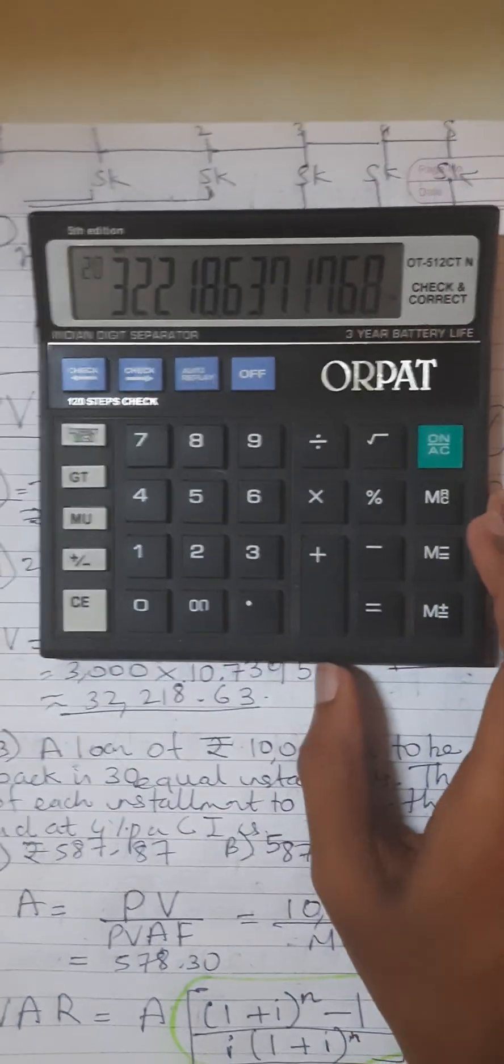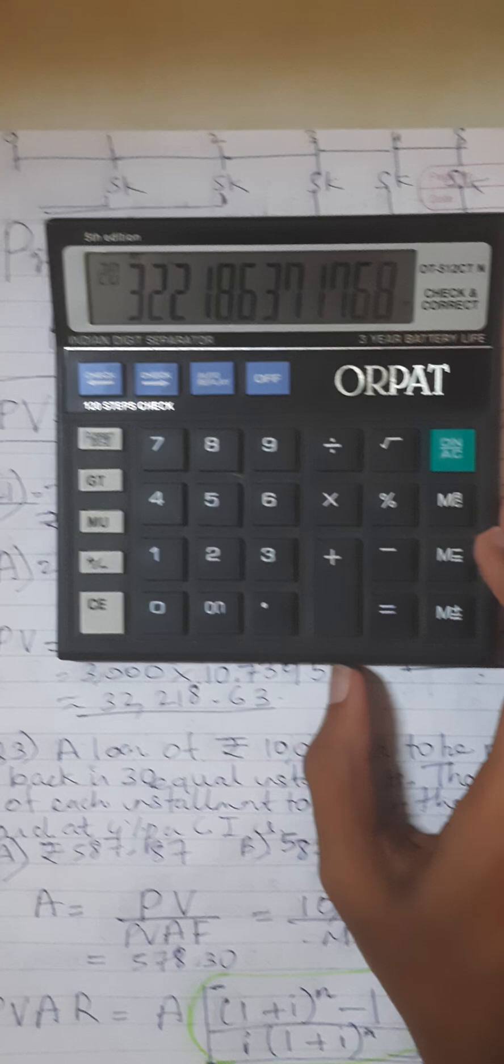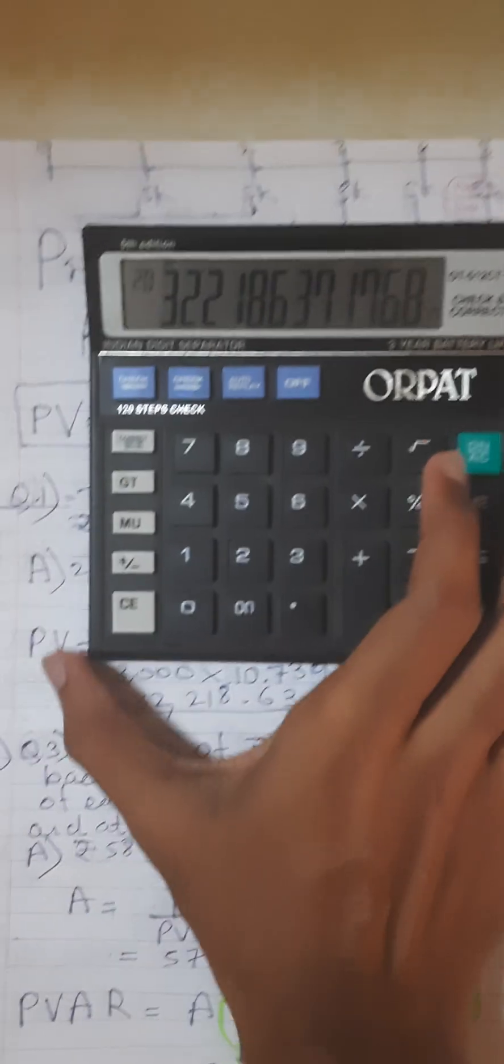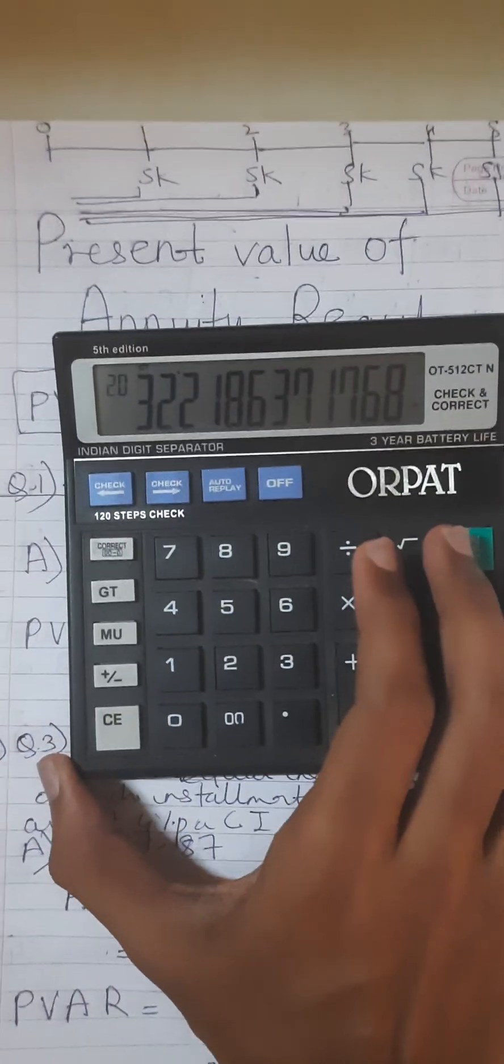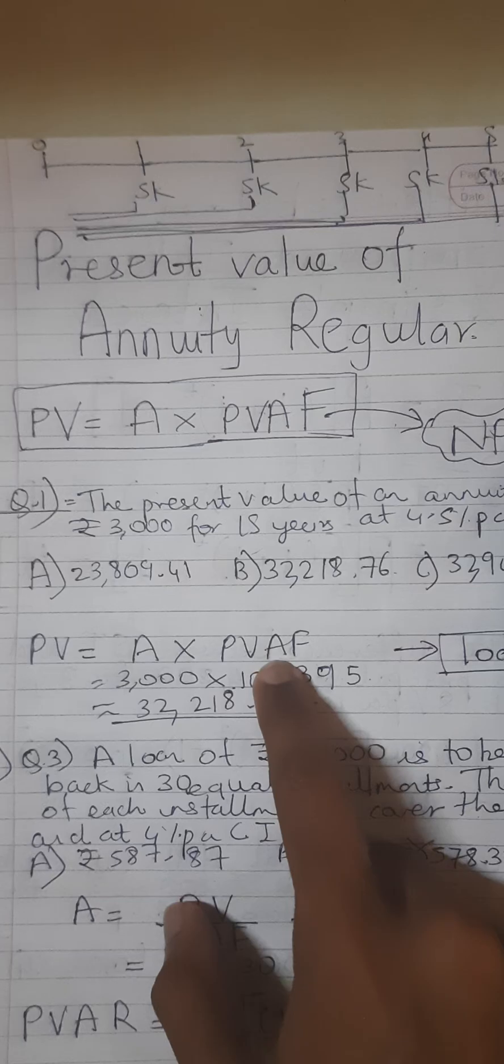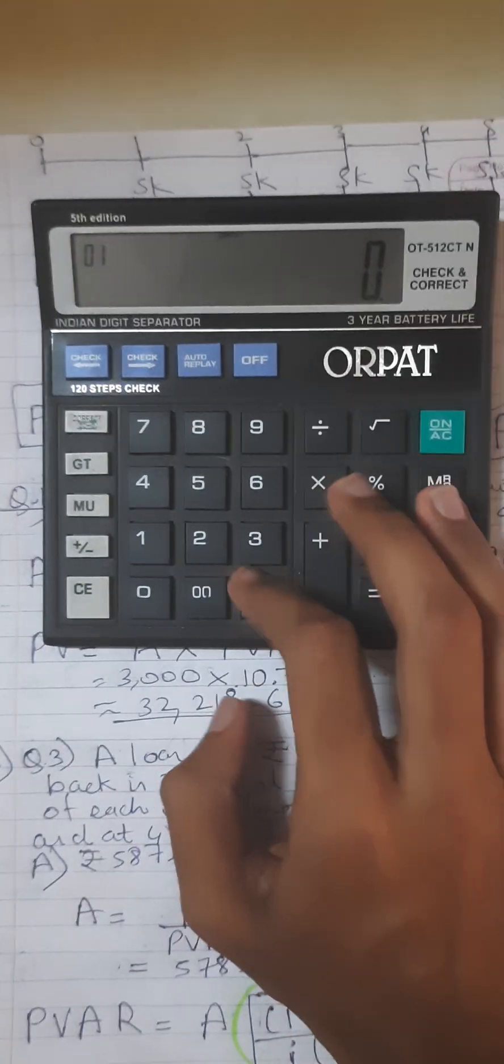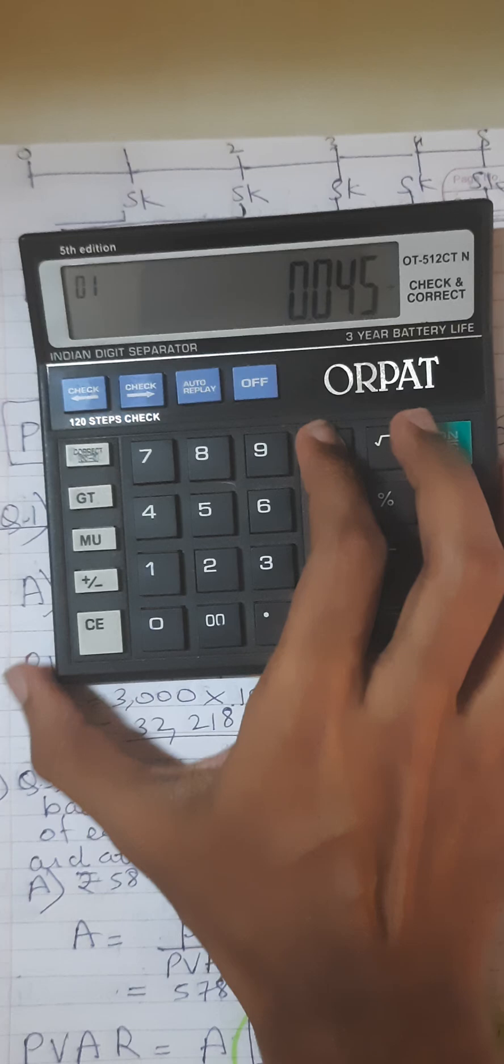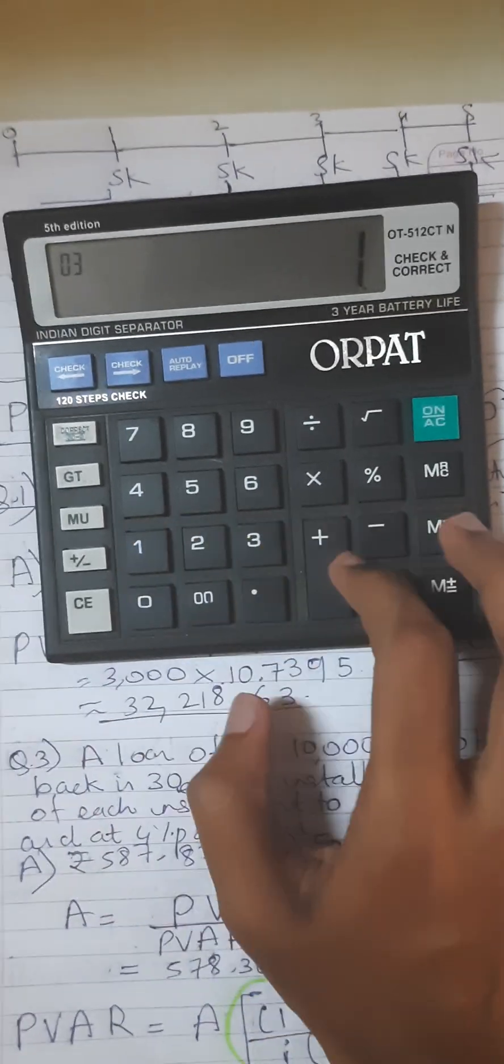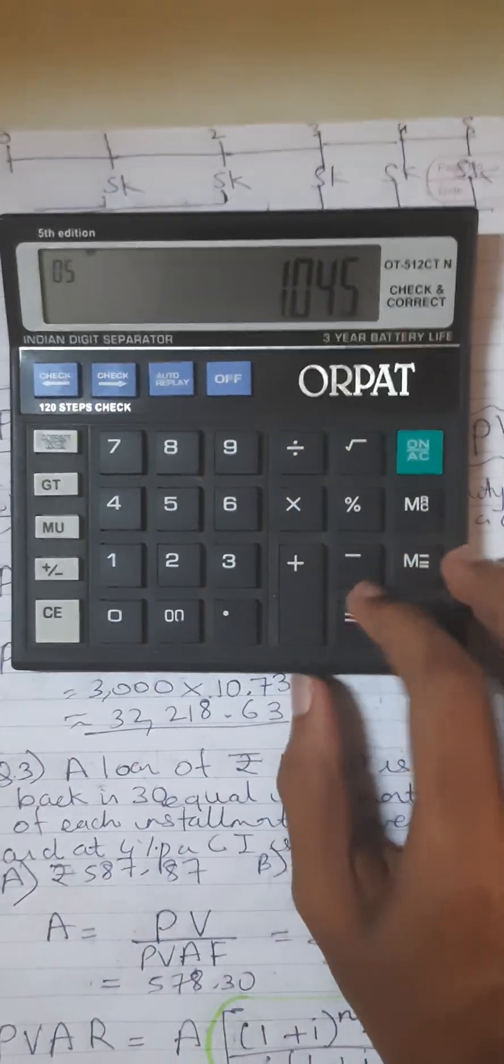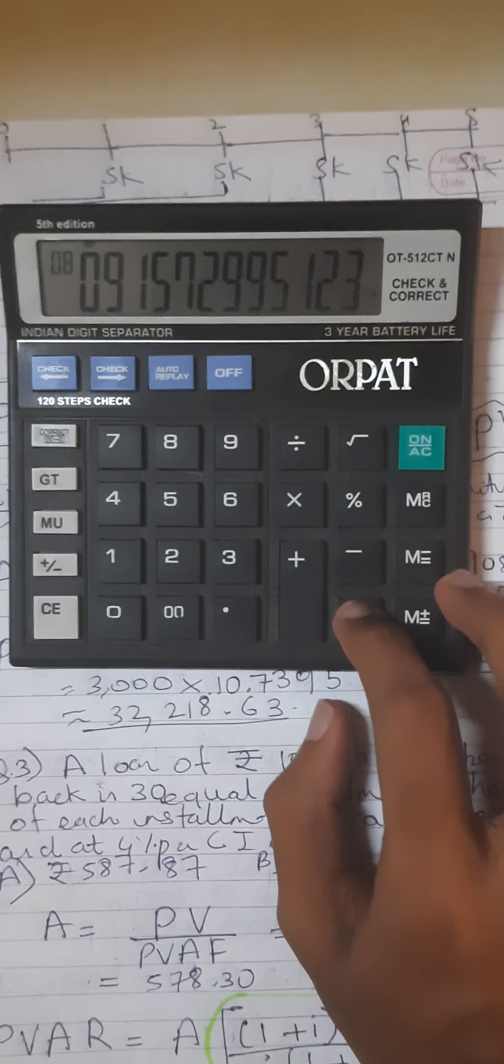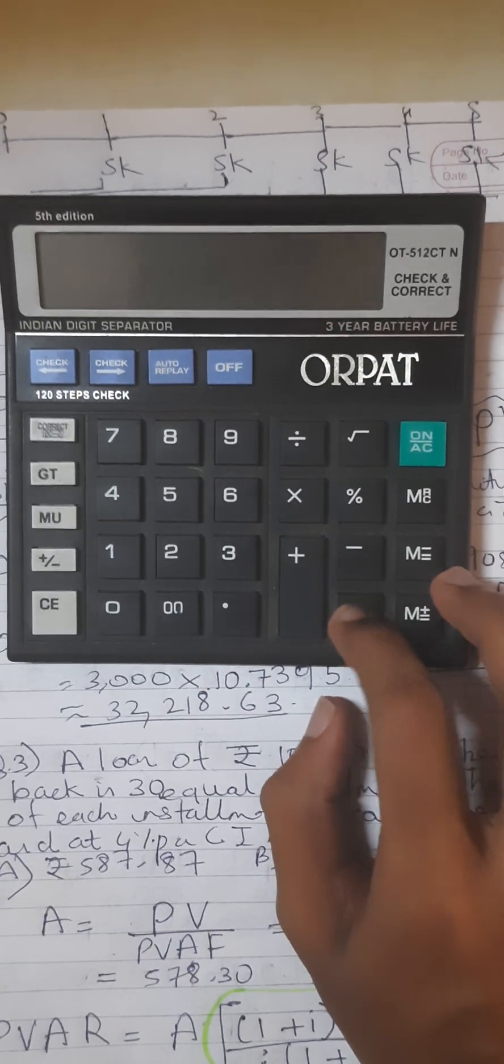But students often go wrong in this and I'll show you how they go wrong. They compute the present value annuity factor wrong. So they do 0.045 divided by 1 plus 1 is equal to, and now they start dividing. Now see the difference - pressing equal 15 times, then GT.